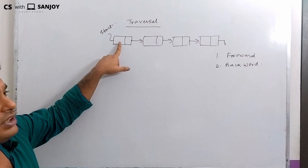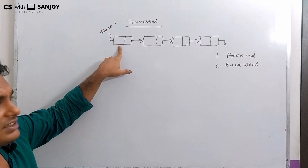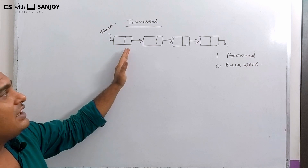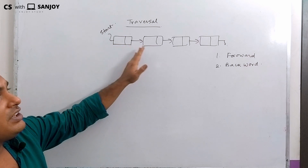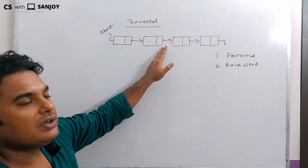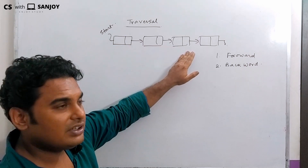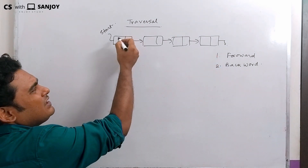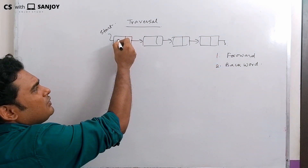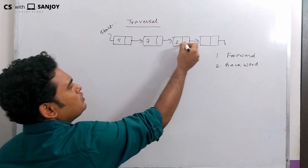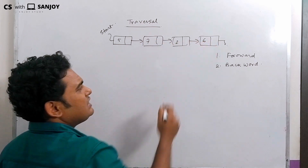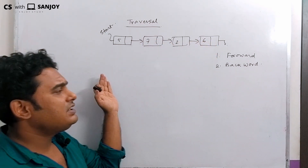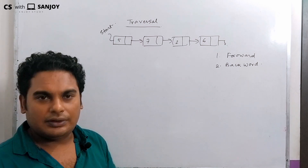The start pointer is pointing to the first node of the linked list. The first node's next part holds the second node's address, and the second node's next part holds the third node's address, and so on. We can see data values 5, 7, 2, 6 in the linked list, and using traversal we can print them.